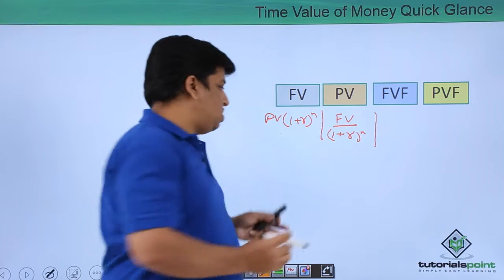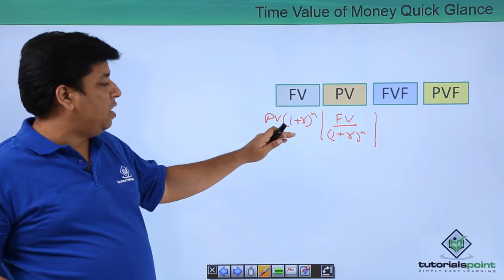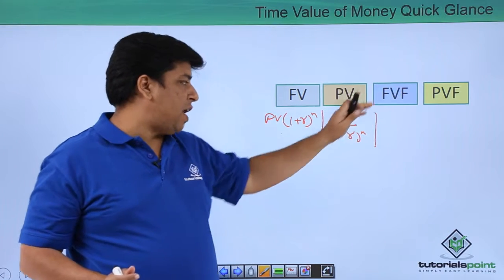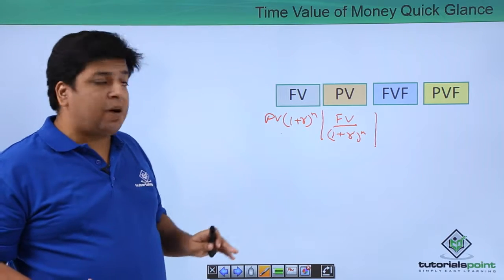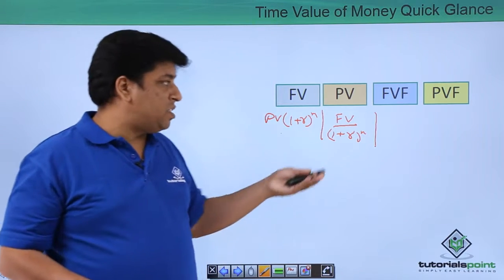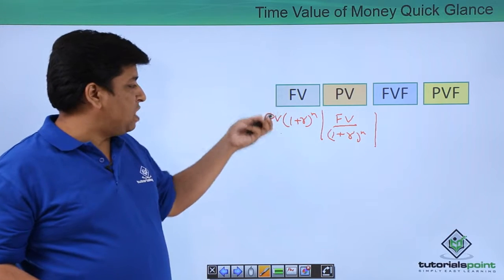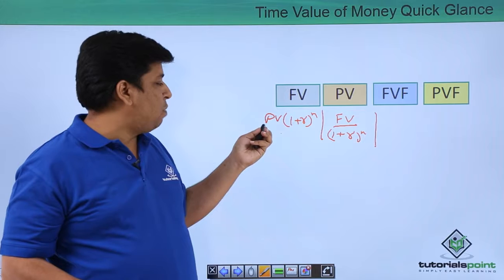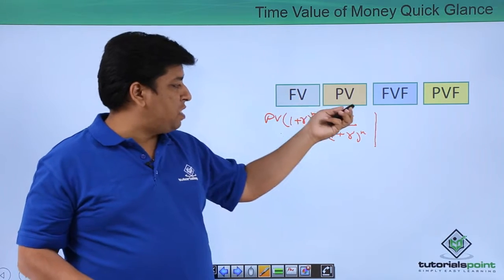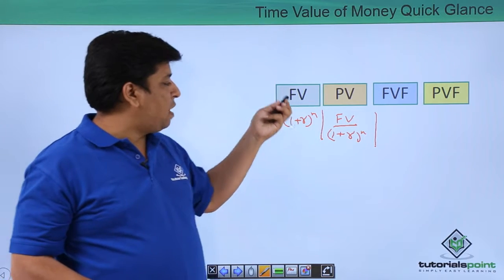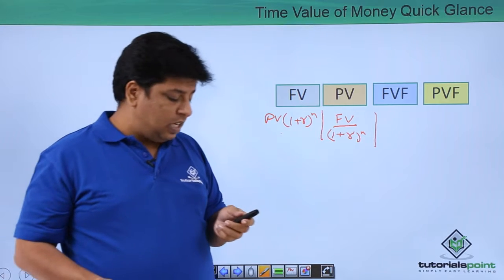The term (1 + r)^n can be denoted as the future value factor, and 1 divided by (1 + r)^n can be denoted as the present value factor. To convert present value to future value, multiply present value by the future value factor. To convert future value to present value, multiply future value by the present value factor.